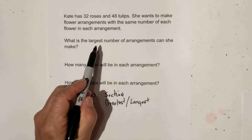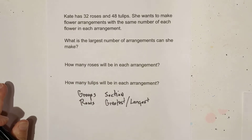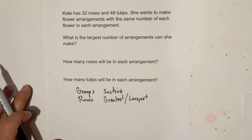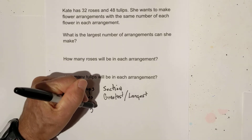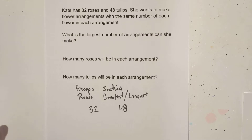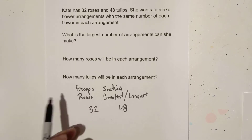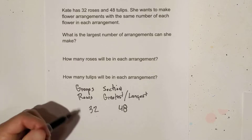They're asking for the largest number of arrangements, so they're asking for groups. I will begin by finding the greatest common factor of 32 and 48. I like to use a factor tree. Remember, the greatest common factor is a factor, so it's going to be equal to or less than 32, or equal to or less than one of these two numbers.